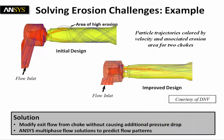Let's look at an example courtesy of DNV where we see the initial design on the left side. You can see the trajectory of the particles which are going to hit at high velocity the piping wall, and that will create erosion.